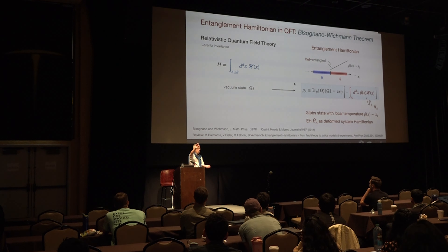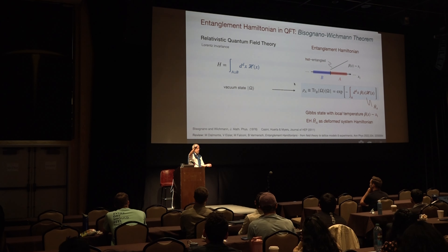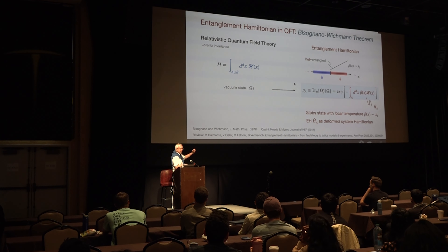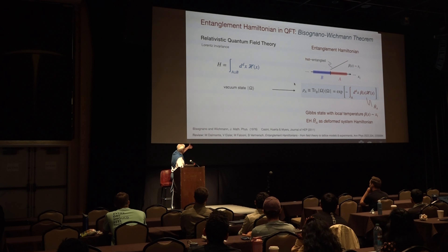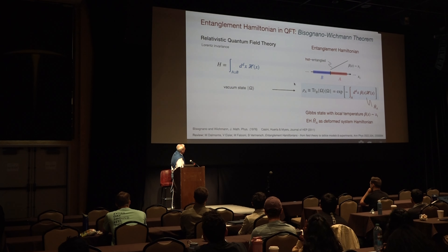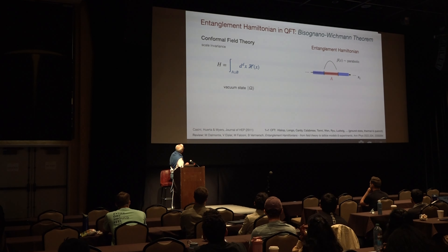So what this theorem tells us is that the entanglement Hamiltonian is nothing other than the original Hamiltonian locally multiplied by a ramp. It can't be simpler. Amazing that this is true for any interacting system. But don't forget, it comes from the symmetry — the symmetry is a key ingredient. There are references here; in particular, there's a review by Arcello if you want to read about these things.